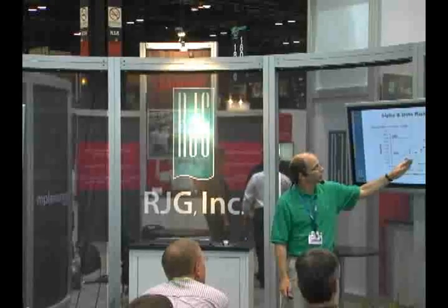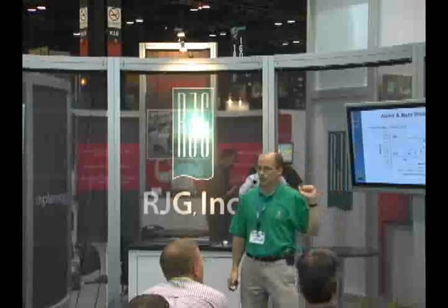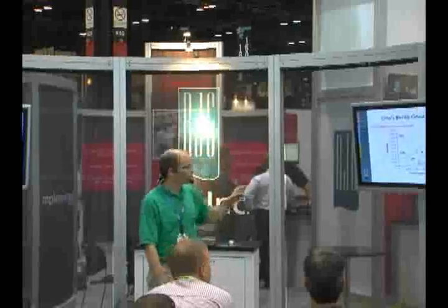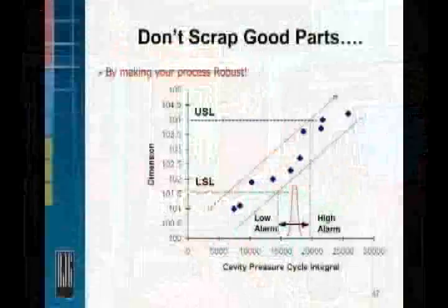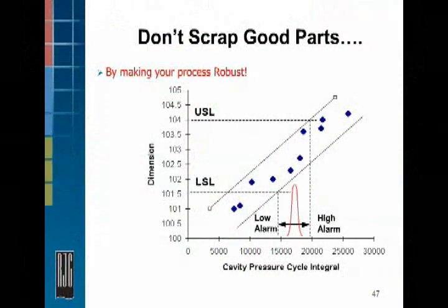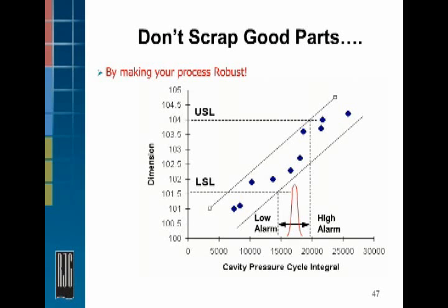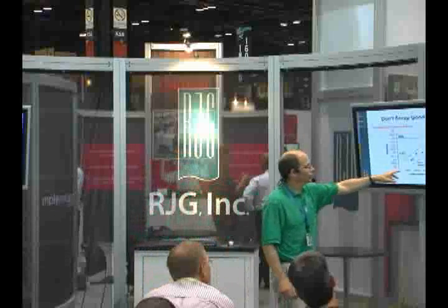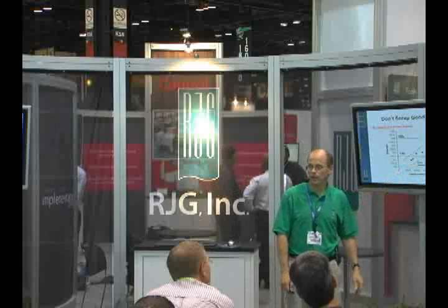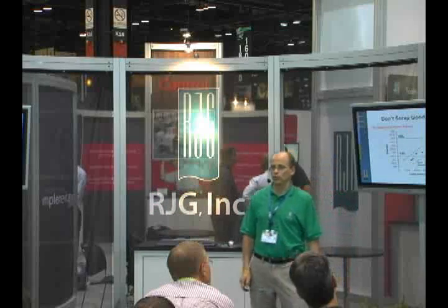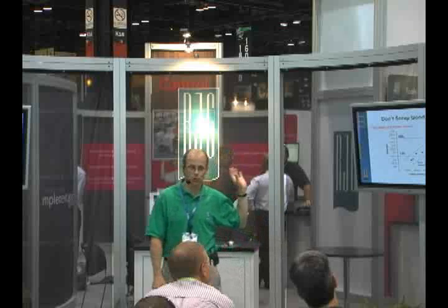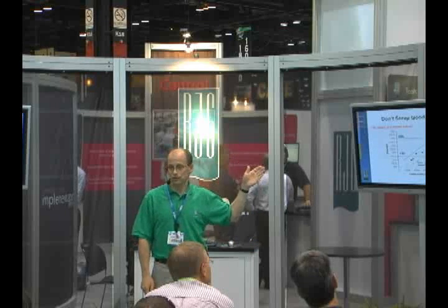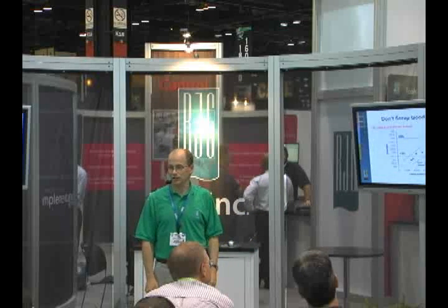Occasionally, we'll get a good part into the reject bin. But if we're running very robust processes and keeping those tight within this zone, then that's the exception — those are the occasional parts that we either look at or throw away. And we have a number of customers who use this to make sure they never send a short shot to their customer.